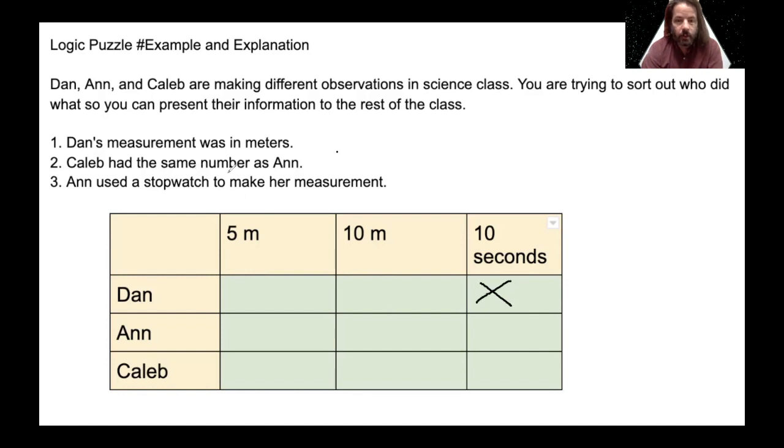Caleb had the same numbers as Ann. So the only numbers that are the same are 10 and 10, 10 meters and 10 seconds. So Ann and Caleb are probably going to be together. But what does that mean? That means that Dan also, Dan wasn't in that group. So I'm not sure if that tells us anything. So let's keep reading.